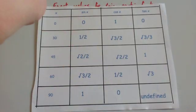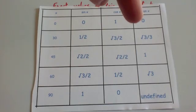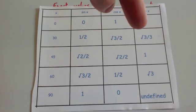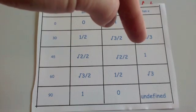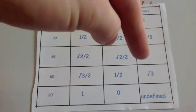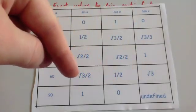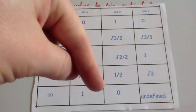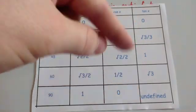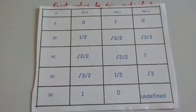Since sine divided by cos is tan: tan of 0 is 0, tan of 30 is root 3 over 3, tan of 45 is 1, tan of 60 is root 3. And tan of 90 is undefined — whenever we do 1 divided by 0 it's undefined, and that's where the asymptote is on the graph.